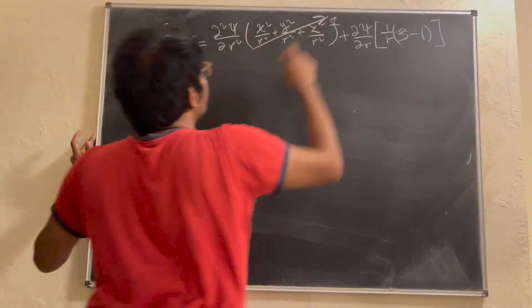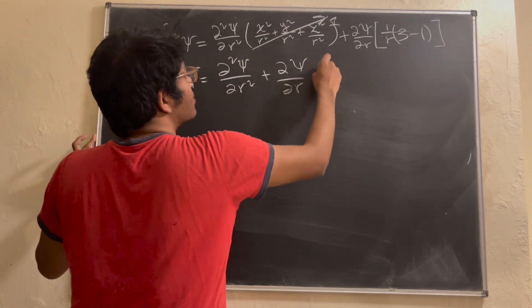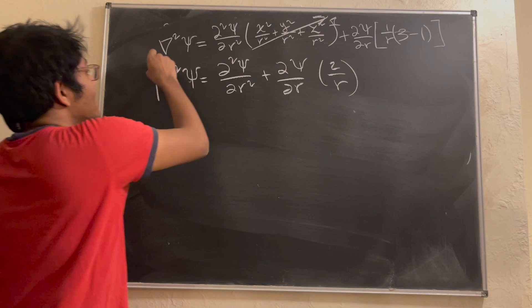And finally, we found the partial derivatives with respect to the X-coordinate, Y-coordinate, and Z-coordinate, and finally, after adding them all up, this is what we get.